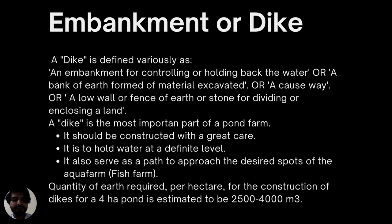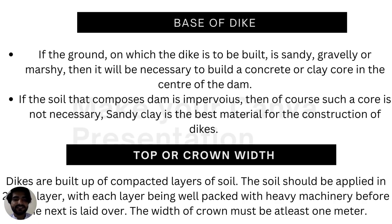A dike is the most important part of a pond farm and should be constructed with great care. It is built to hold water at a definite level, which is necessary for culturing fish. It also serves as a path to approach desired spots of the aqua farm. The quantity of earth required per hectare for the construction of dikes for a four-hectare pond is estimated to be 2500 to 4000 cubic meters.